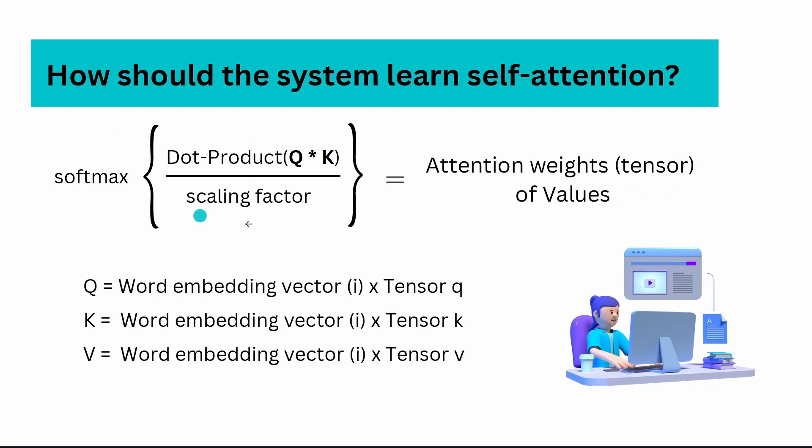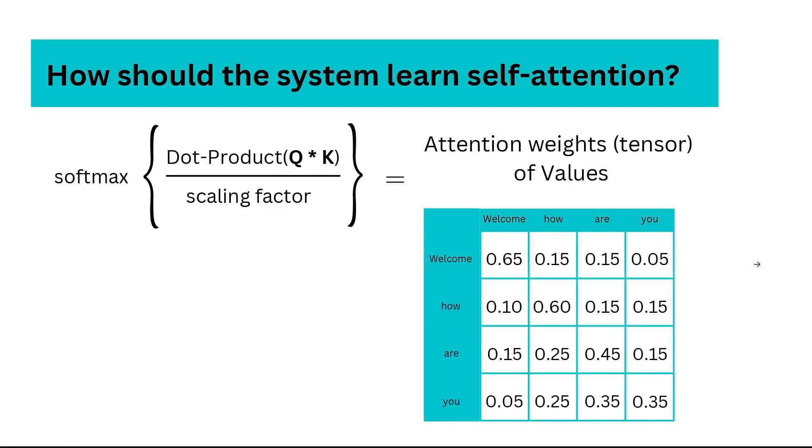What we have here is called attention weights or a weight tensor of our values. This is how we do it. Those are the three tensors, the three parameters of the system we can tune. How can you imagine what this is? Imagine we have a sentence with four words: Hello, how are you? We want to have now a context-aware word embedding.